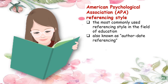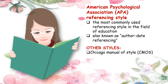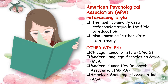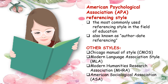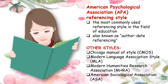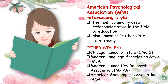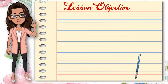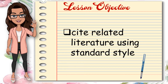However, this is not the only referencing style available. There are Chicago Manual of Style or CMOS, Modern Language Association style or MLA, Modern Humanities Research Association or MHRA, American Sociological Association or ASA, and the like. But in the meantime, your focus is on APA 6th Edition Manual of Style. At the end of this module, you are expected to cite related literature using standard style.